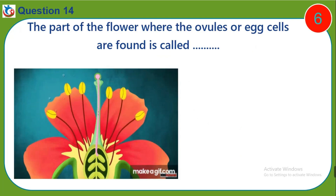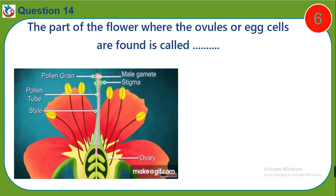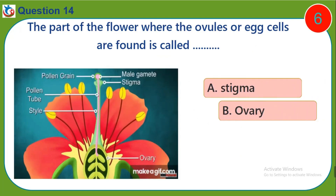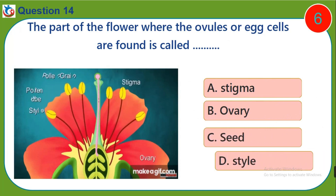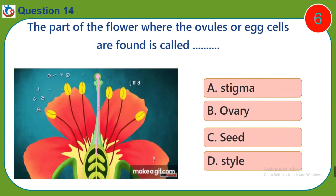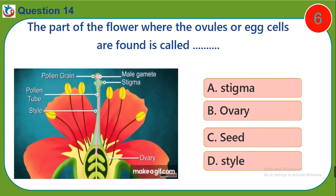Question fourteen: The part of the flower where the ovules are found is called — a) stigma, b) ovary, c) seed, d) stamen.